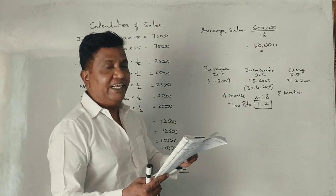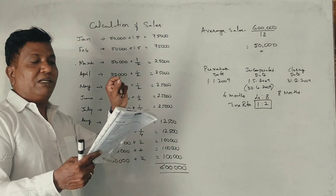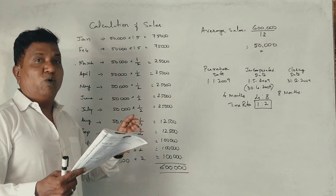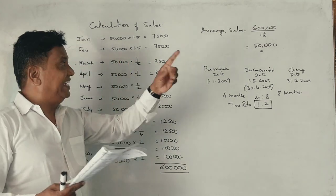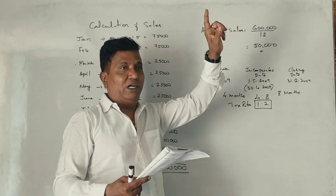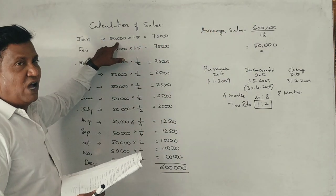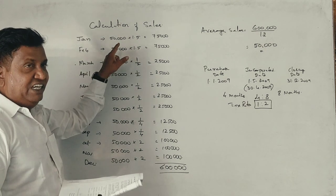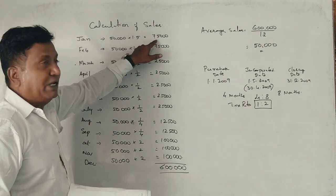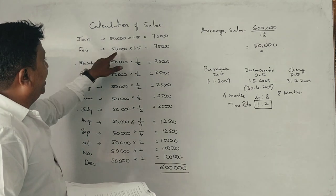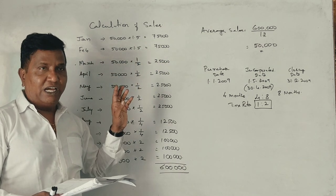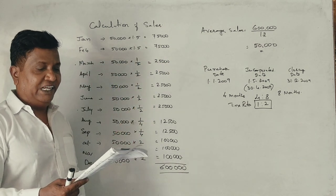For January and February, one and a half times the average monthly sales. So if average sales are 50,000, for January it would be 1.5 times 50,000. Let me calculate this.